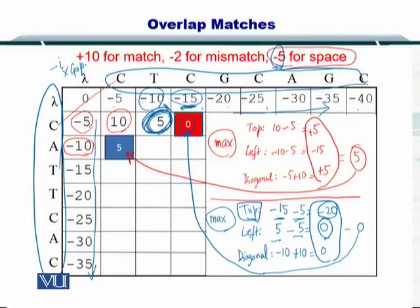While for the diagonal, it was minus 10 here and you placed minus 10 here. You added a plus 10 because C is matching with a C here for this position. So it will be minus 10 plus 10. That will be zero. So you apply the maximum operator on these three values and you get the answer to be equal to zero. So you placed a zero here.